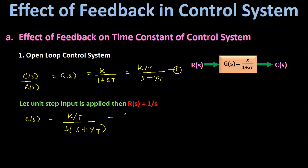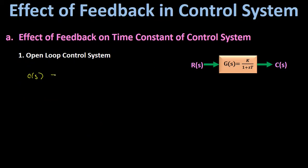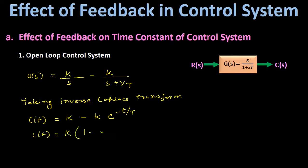Applying the partial fraction method, C(s) = A/s + B/(s + 1/T). Finding the constants A and B, we get A = K and B = −K. Therefore C(s) = K/s − K/(s + 1/T). Taking the inverse Laplace transform, the output response c(t) = K − K·e^(−t/T), which simplifies to c(t) = K(1 − e^(−t/T)).